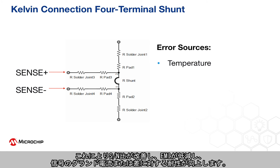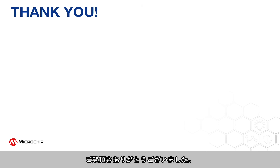Another important recommendation is to preserve the differential routing from the shunt to the sense pins. This improves the signal-to-noise ratio, reduces EMI, and makes the signal more immune to ground currents or differences. Thank you for watching.